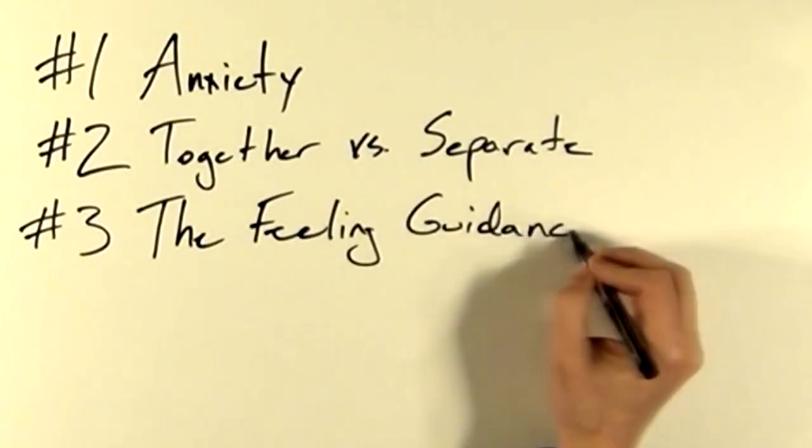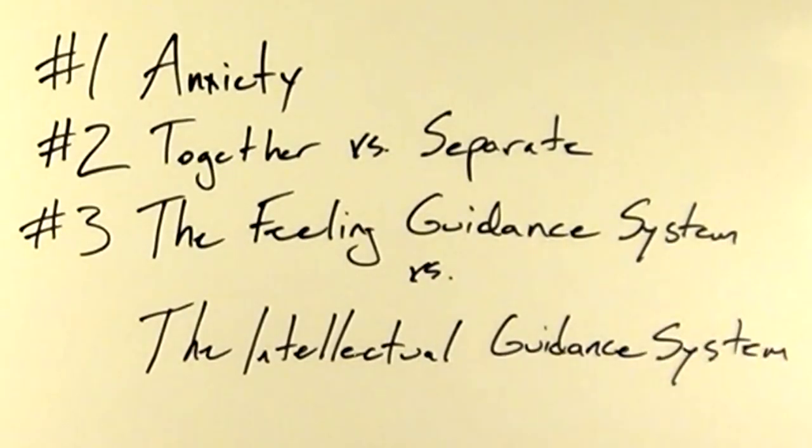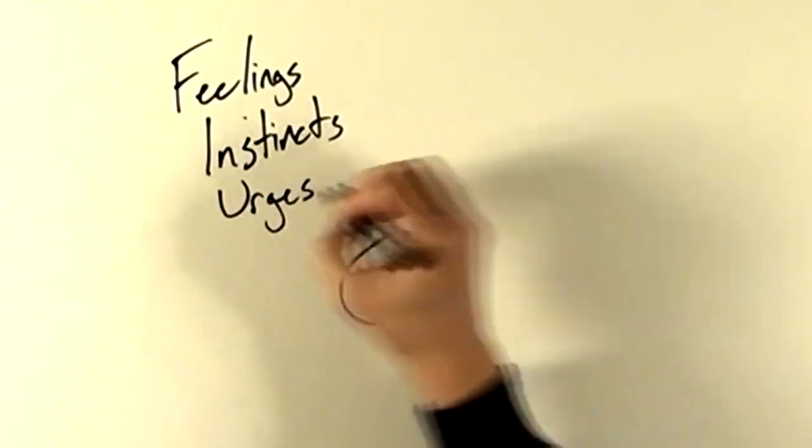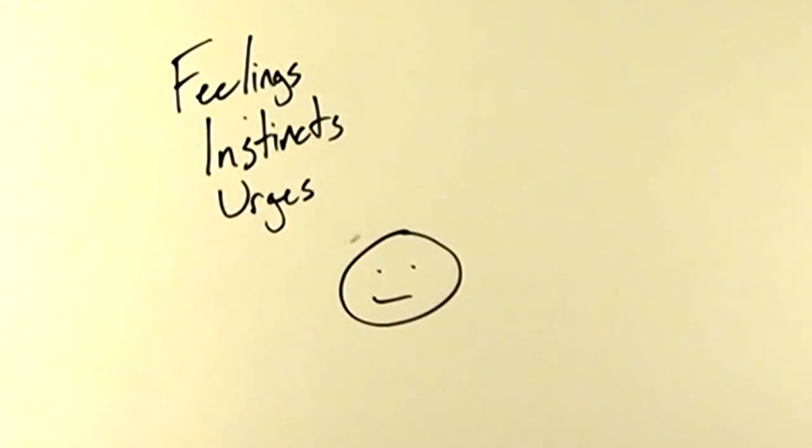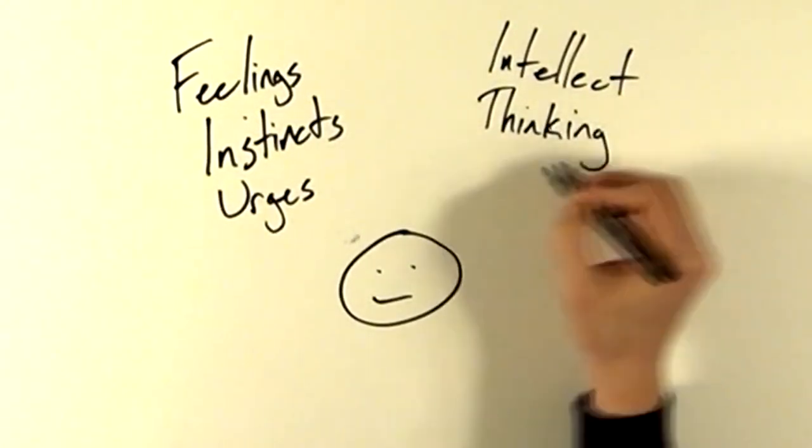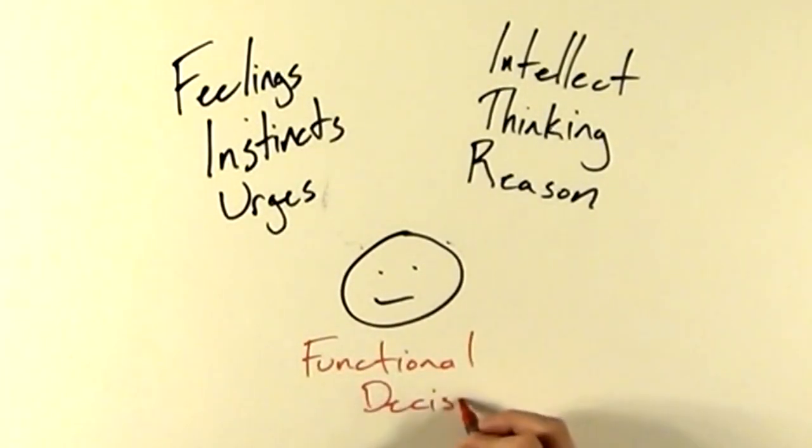Number three, the feeling guidance system versus the intellectual guidance system. Bowen believed that we have two inner guidance systems: the feeling or emotional guidance system, and the intellectual or reasoning guidance system. The feeling guidance system involves emotion, automatic reactions, knee-jerk reactions, instincts, urges, etc. And the intellectual guidance system involves thinking, judgment, logic, rational thought, reasoning, etc. Bowen asserted in order to make functional decisions, we need access to both guidance systems, and we need to be able to differentiate between them.